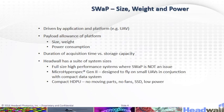Headwall has a suite of system sizes. The full-size, high-performance system is for cases where SWaP is not an issue. We also have the Micro-Hyperspec Gen 2, designed to fly on small UAVs in conjunction with a compact data system — compact HDPU — with no moving parts, no fan, SSD storage, and low power.